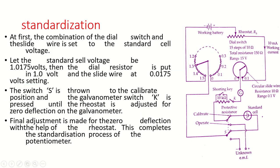The first procedure, before finding the unknown EMF, is standardization of the potentiometer. Standardization means comparing the output of the potentiometer with a known value of EMF to check whether the results match. If not matching, adjust the rheostat or dial position to get the correct value. First, the combination of dial switch and slide wire is set to the standard cell voltage — for example, 1.0175 volt.